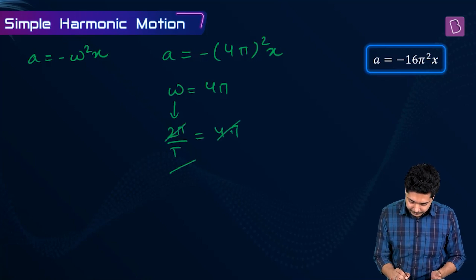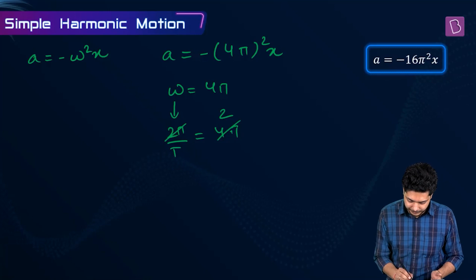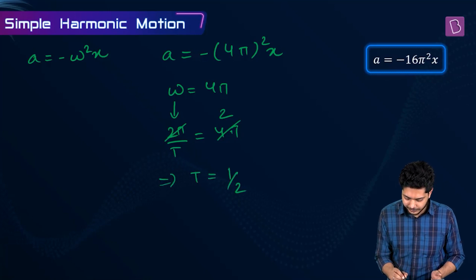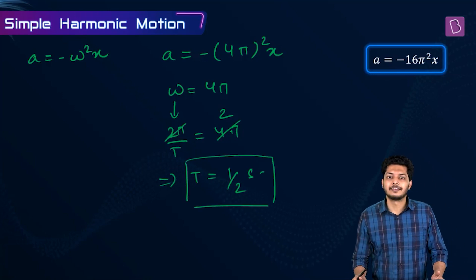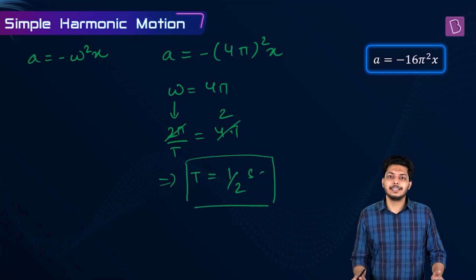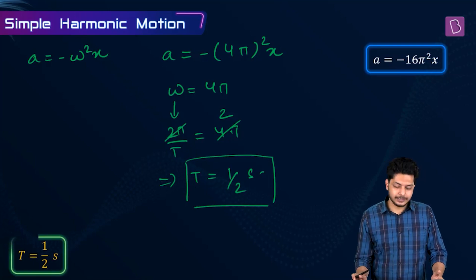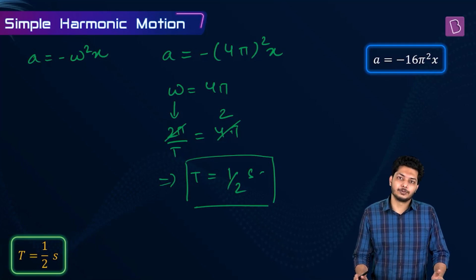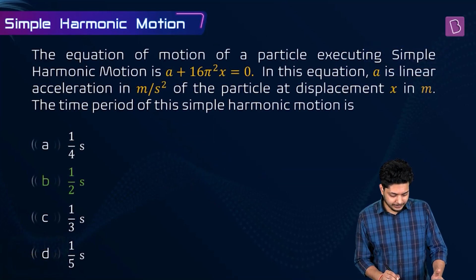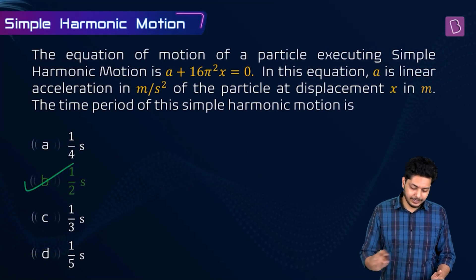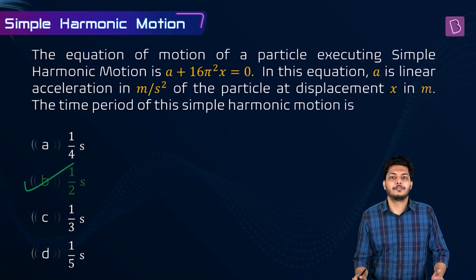Since 2π divides into 4π twice, T equals 1/2 seconds. So the time period is 1/2 seconds, and option B is the correct answer for this question.